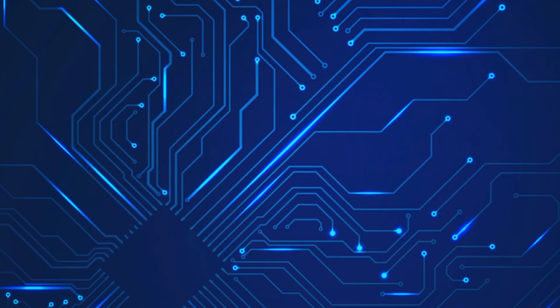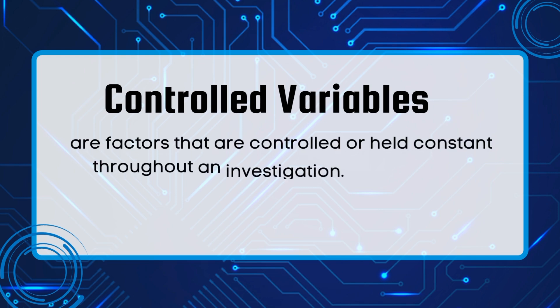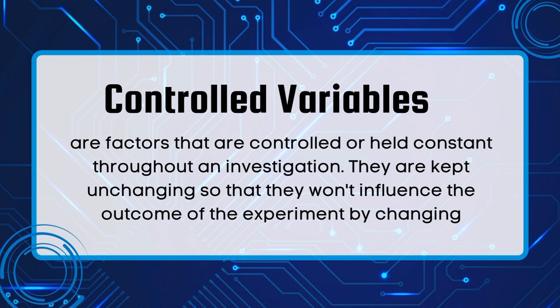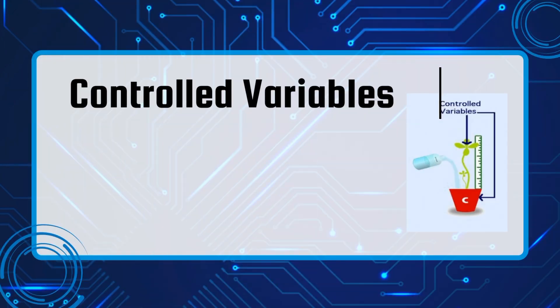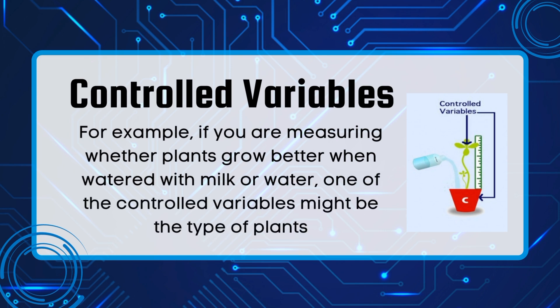First, we have controlled variables. Controlled variables are factors that are controlled or held constant throughout an investigation. They are kept unchanging so that they won't influence the outcome of an experiment. However, they do have an impact on the experiment. For example, if you are measuring whether plants grow better when watered with milk or water, one of the controlled variables might be the type of plants.